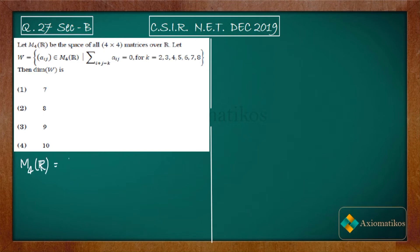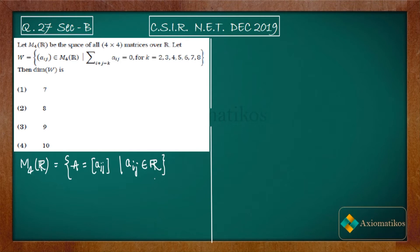M4 over R is a space of matrices over the field R, meaning it consists of 4×4 matrices A = [a_ij] such that a_ij is inside R. Note that it is not necessarily the case that because the field is R, a_ij must be from R — it can happen that even if the field is R, a_ij is inside C.